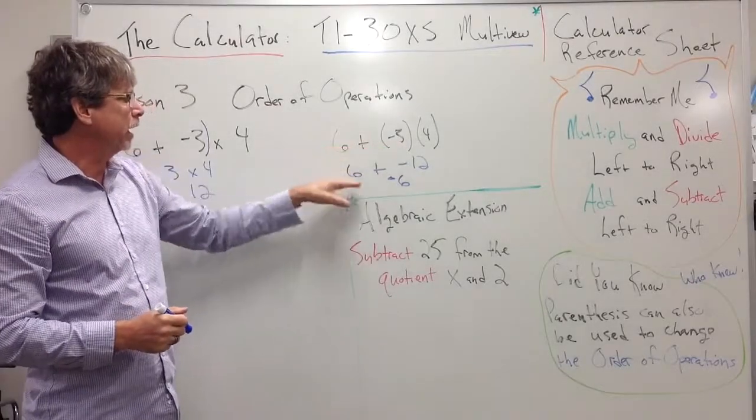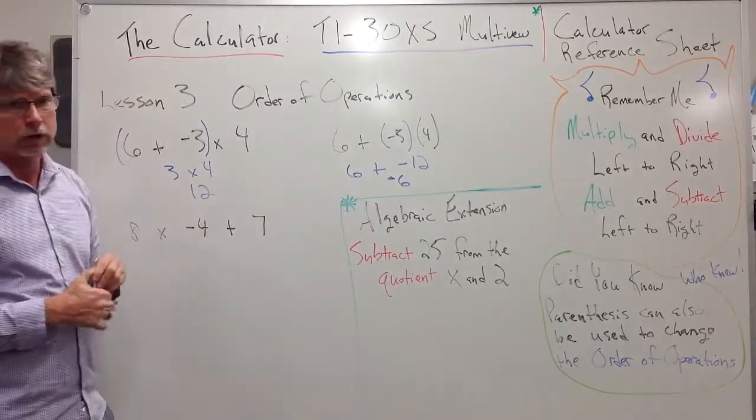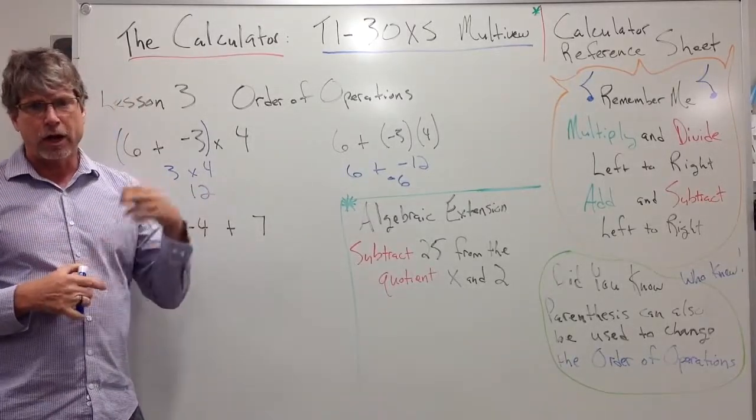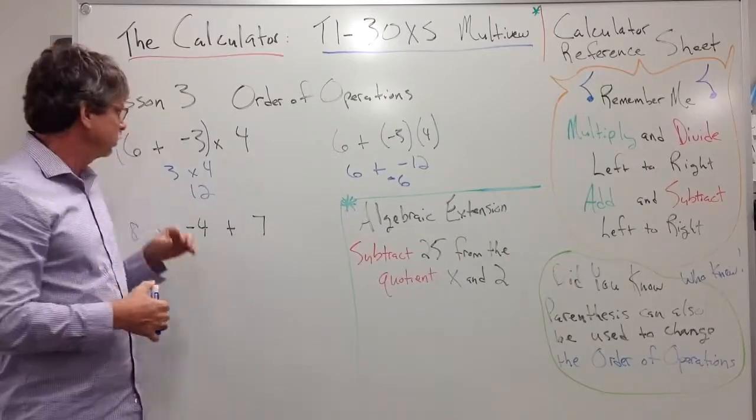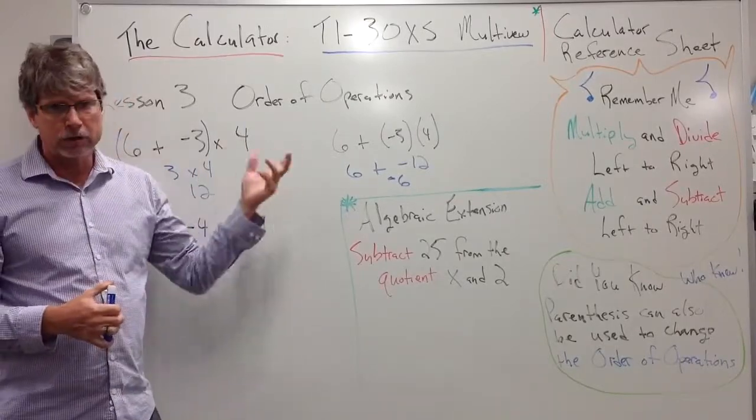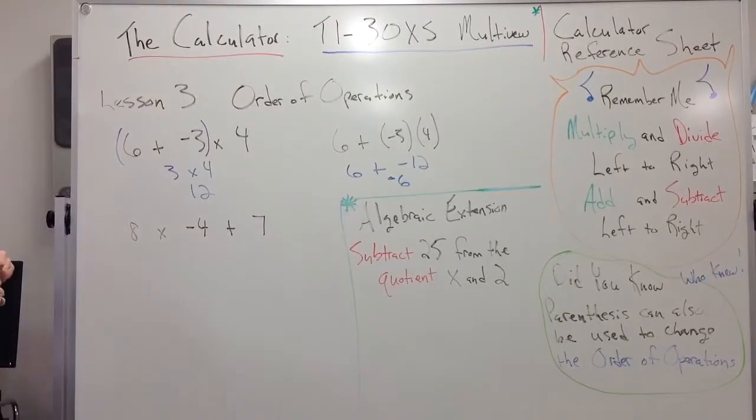And notice how that does change the order of operations. Over here, when I multiply and then add it, I got -6. Over here, when you add it and then multiply it, I get 12. So if you do want addition to go before multiplication or division, you have to put parentheses around it. Otherwise, it will be done incorrectly.